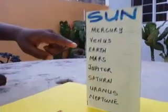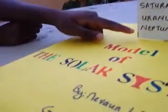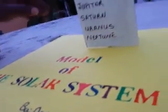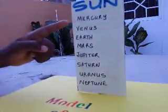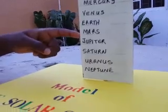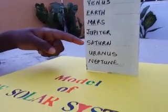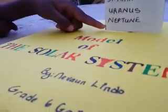Mercury, Venus, Earth, Mars, Jupiter, Saturn, Uranus, and Neptune. This is the inner planet: Mercury, Venus, Earth, and Mars — that's the inner planet. The outer planet is Jupiter, Saturn, Uranus, and Neptune. I know this project is awesome! We are going to get a blast!